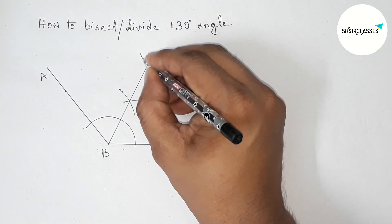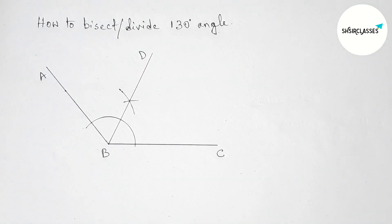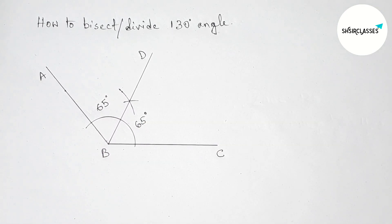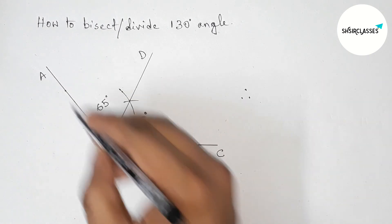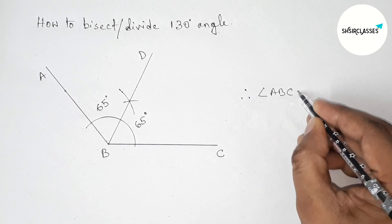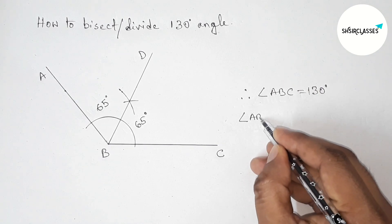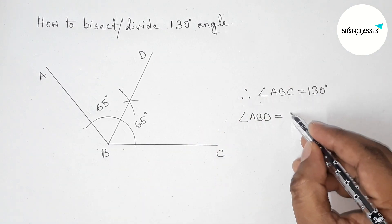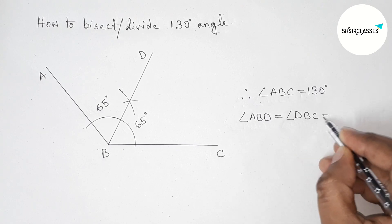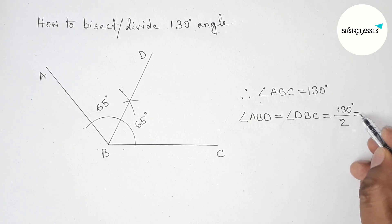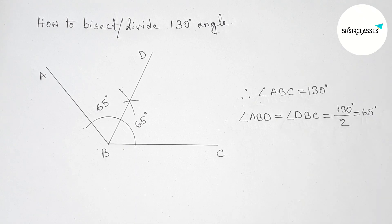Now joining this line which bisects the 130 degree angle equally. Taking point D here — angle ABD is 65 degrees and angle DBC is also 65 degrees. So both angles are 65 degrees. Therefore, angle ABC is 130 degrees, and angle ABD equals angle DBC, both being 130 divided by 2, that is 65 degrees.